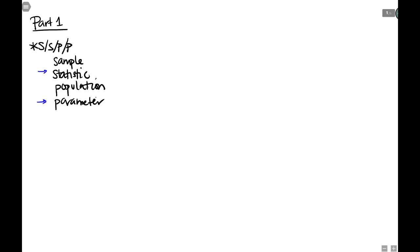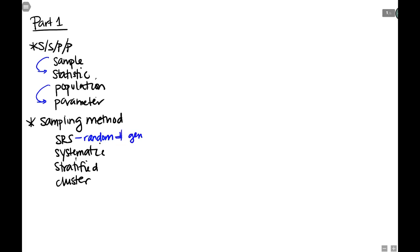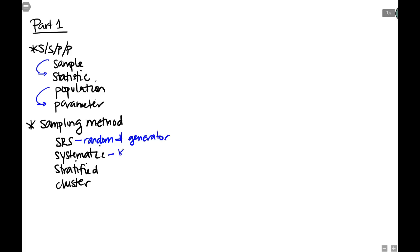The next question from part one will be about sampling methods — specifically those big four: SRS, systematic, stratified, and cluster. SRS is really simple — it's just random, like pulling names out of a hat or using a random number generator, with no grouping. Systematic is where we look for every kth item, like every 13th or every 10th.